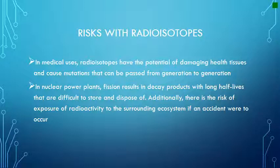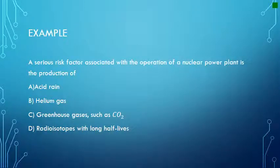There are risks associated with radioisotopes. In medical uses, radioisotopes have the potential to damage healthy tissues and cause mutations that can be passed from generation to generation. In nuclear power plants, fission results in decay products with long half-lives that are difficult to store and dispose of. Additionally, there is the risk of exposure to radioactivity to the surrounding ecosystem if an accident were to occur. A serious risk factor associated with the operation of a nuclear power plant is the production of — answer D — radioisotopes with long half-lives.